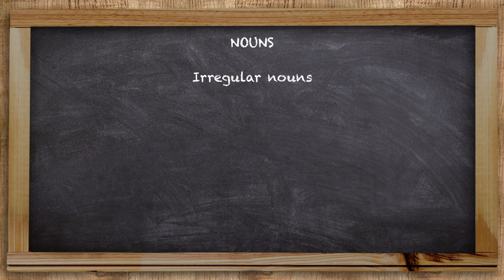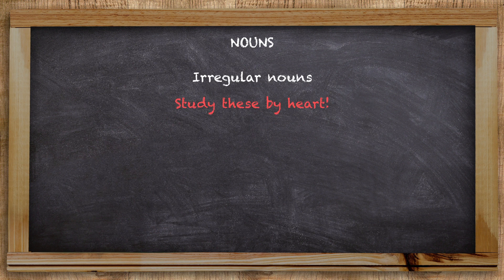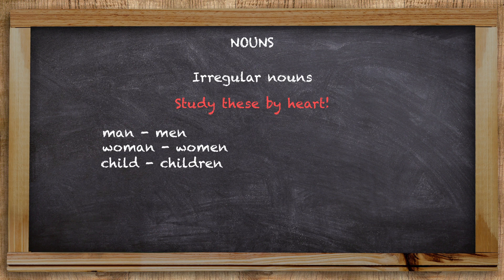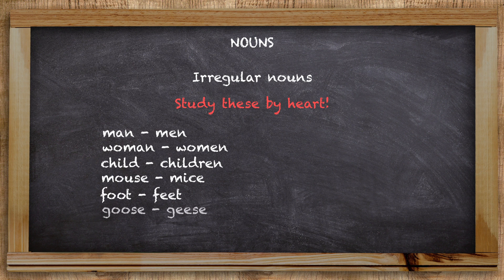Last but not least, there are also some irregular nouns. These regularly used ones should be studied by heart. Man becomes men. Woman becomes women. Child becomes children. Mouse becomes mice. Foot becomes feet. Goose becomes geese. And tooth becomes teeth.